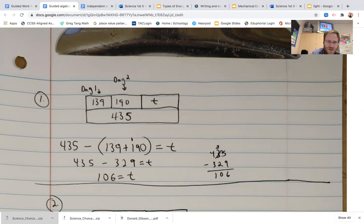So the equation would be 435 minus the 139 plus the 190. If we added those two amounts together, we would get 329, and then we would subtract that from the 435 and get T.